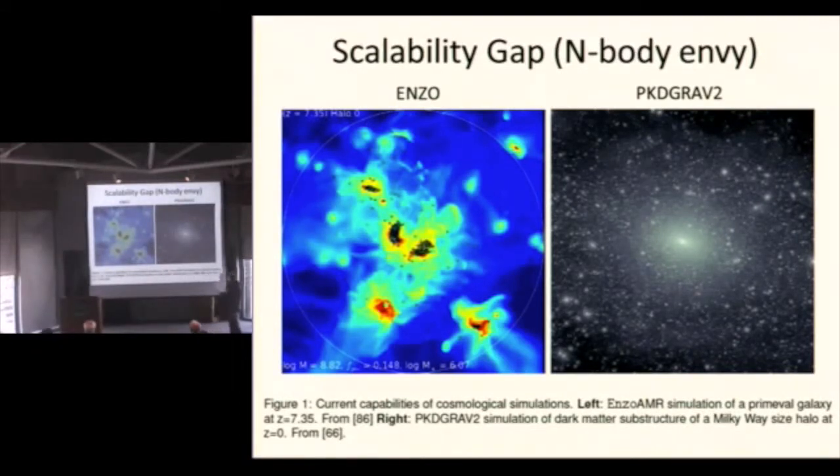And so here is my motivation slide. I call it the n-body envy. So we've all seen these awesome n-body simulations that have just a tremendous amount of substructure in them. And this happens to be PKD-GRAV2, but there's a half a dozen codes that can make pictures like this. And over here is Enzo, which is a multi-physics AMR code. This is a simulation of a dwarf galaxy at redshift 7.35, and it's a radiation hydrodynamics code with dark matter and cooling and all that good stuff. The particles are actual star clusters.